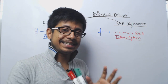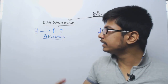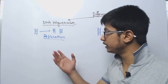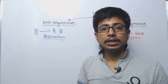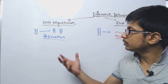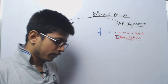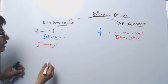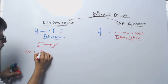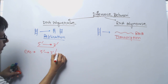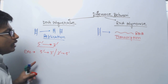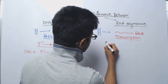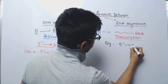DNA polymerase also has different units — mainly two purposes: one is the polymerization part, and another is the exonuclease or proofreading part. DNA polymerase can polymerize from five prime to three prime, and the exonuclease activity operates in the five prime to three prime as well as three prime to five prime direction. RNA polymerase shares the same feature — it can also polymerize from five prime to three prime.